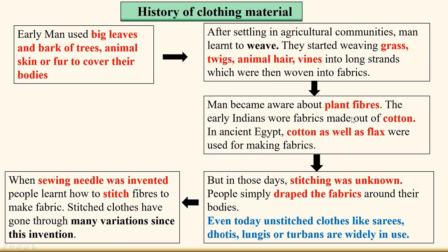Early Indians wore fabrics made of cotton. In ancient Egypt, cotton as well as flax were used for making fabrics. But in those days, stitching was unknown — people simply draped the fabrics around their bodies. Even today, unstitched clothes like sarees, dhotis, lungis, or turbans are widely used. When the sewing needle was invented, people learned how to stitch, and stitched clothes have gone through many variations since then.